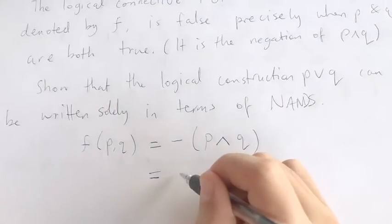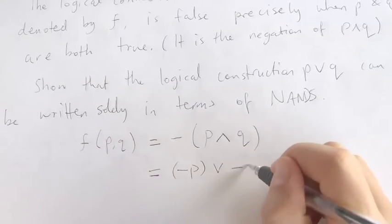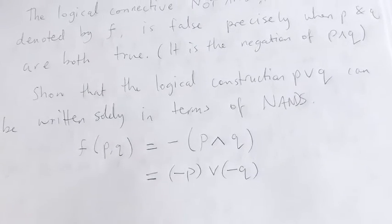And there was a rule that told us how to take these negations. Remember it was something like not P, the negation of P or negation of Q.